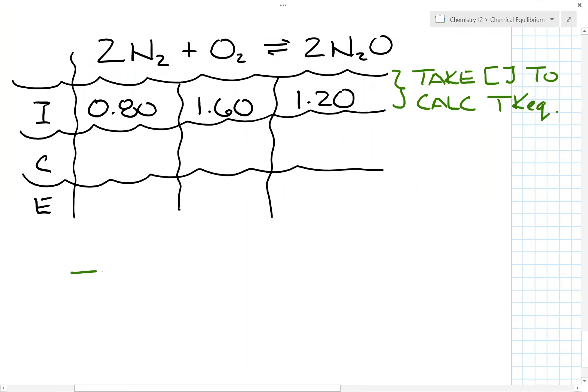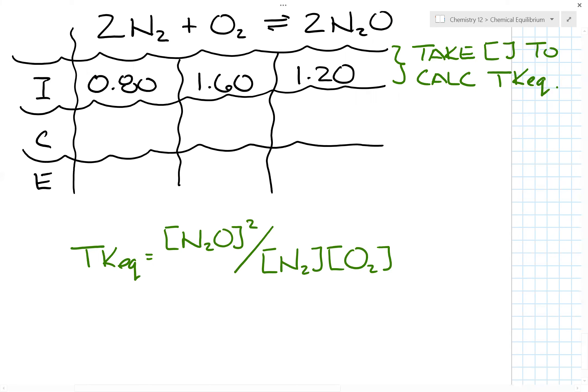So here I will go TKeq. The setup is still the same, concentration of N2O squared, divided by the concentration of N2 squared, concentration of O2. We plug it in. So this will be 1.20 all squared, divided by 0.80 squared and 1.60.